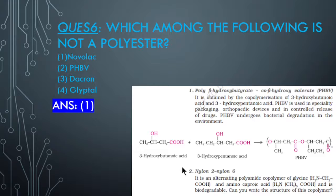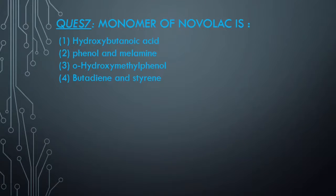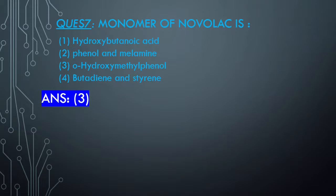Now next question: the monomer of Novolac is? It is formed from the Bakelite part. The answer is ortho-hydroxymethylphenol. Even if you will see the options carefully and have read a little bit about Novolac, you can answer this because the options are very simple.